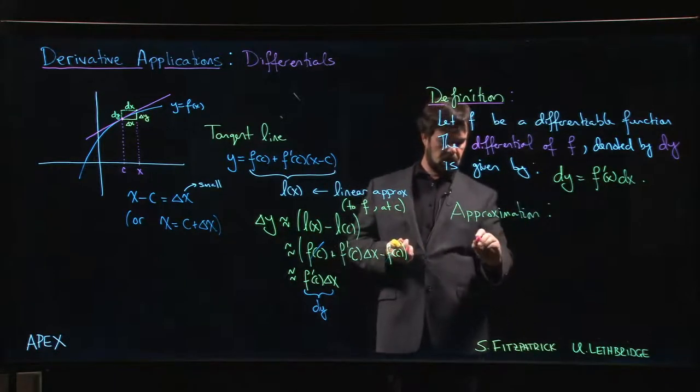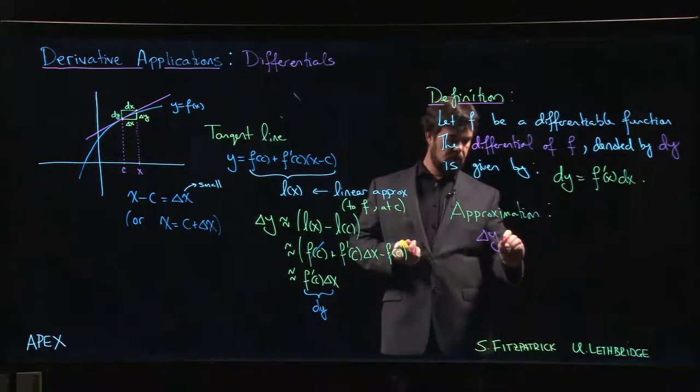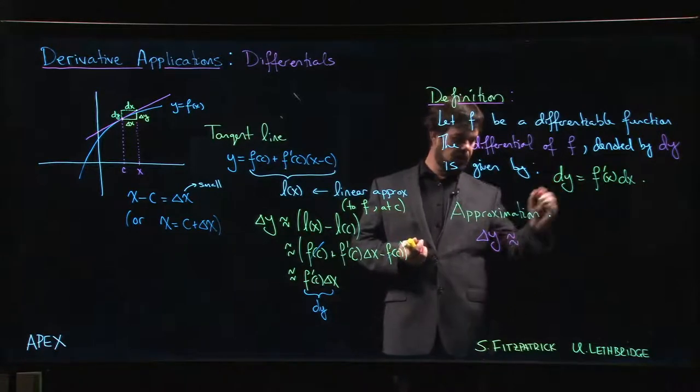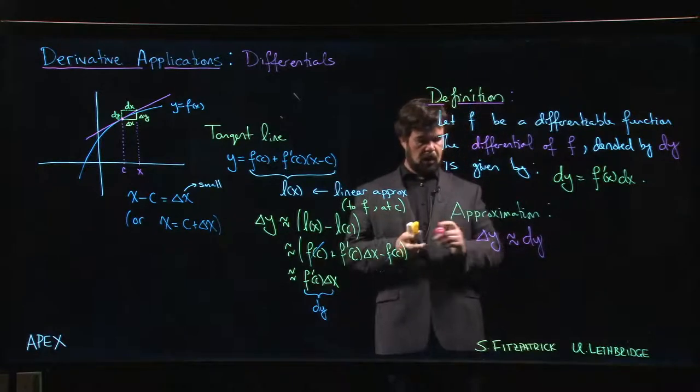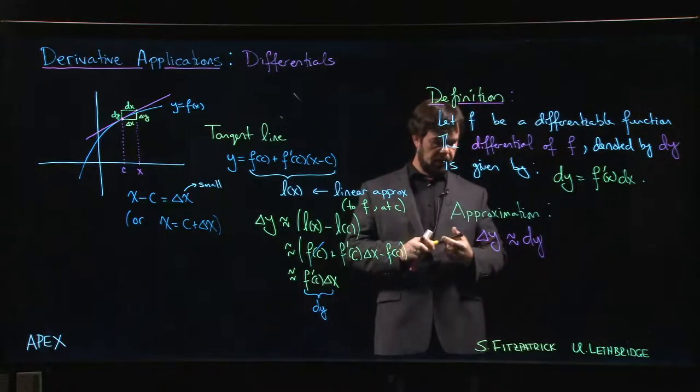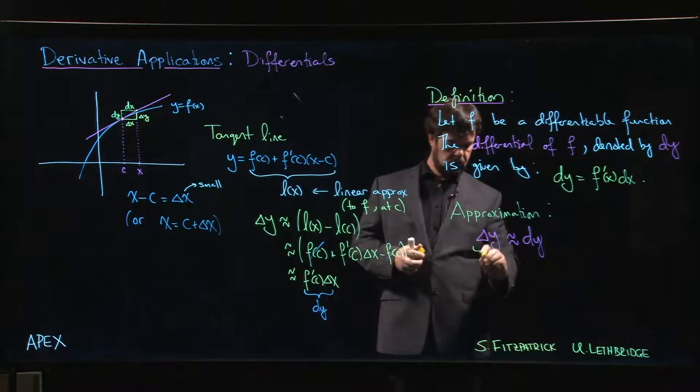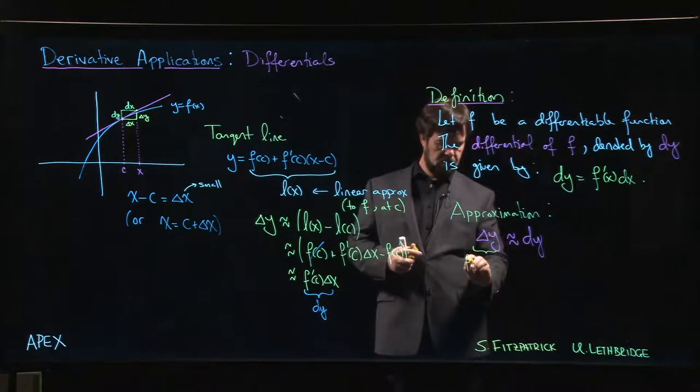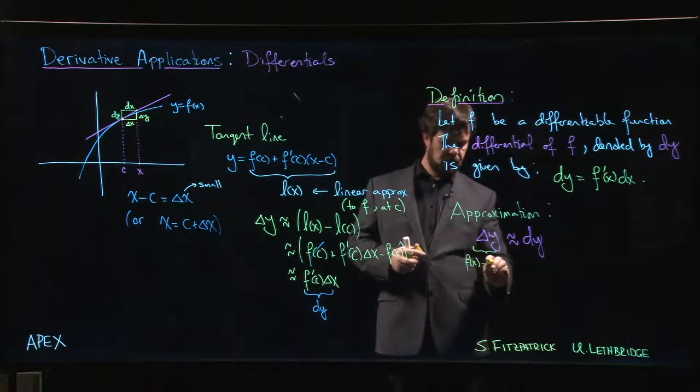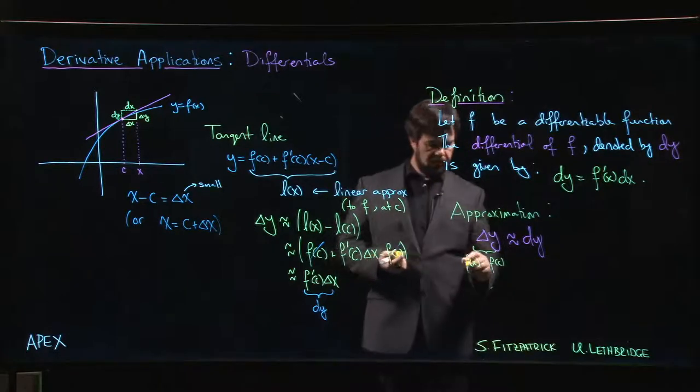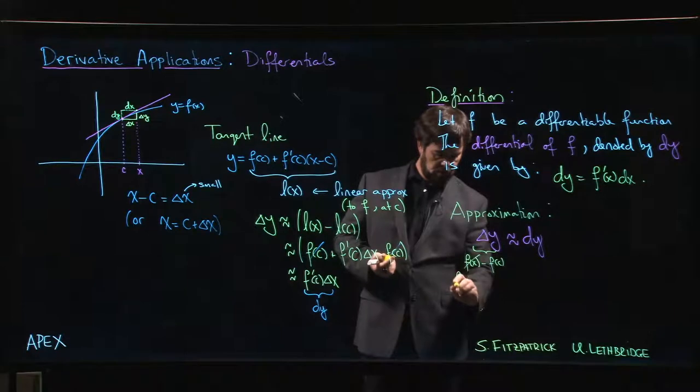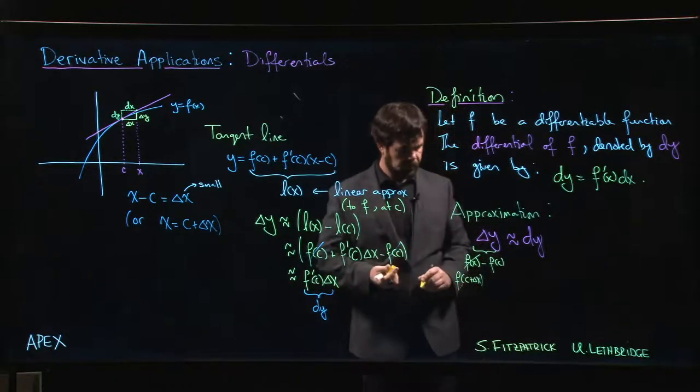But the idea here is that our delta y should be approximated by dy. Where by delta y, over here we mean F of x minus F of c, or if you like, rather than saying F of x, we might say F of c plus delta x.